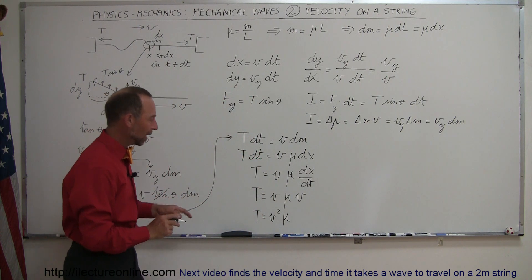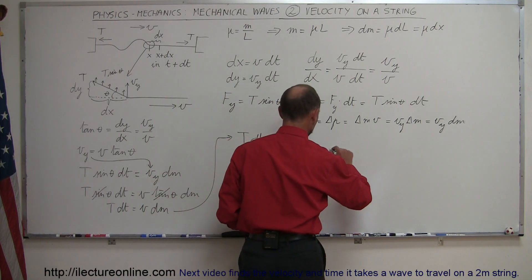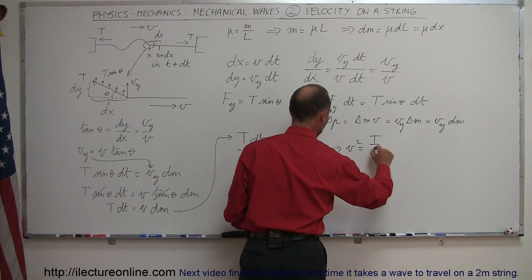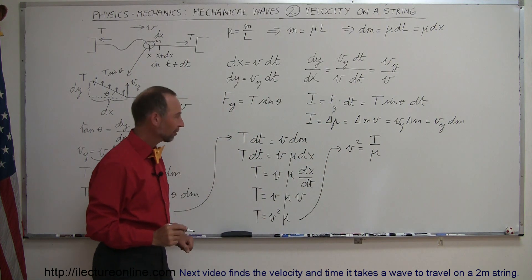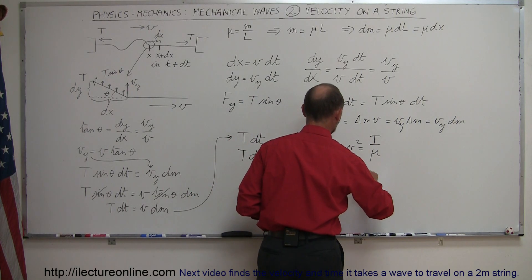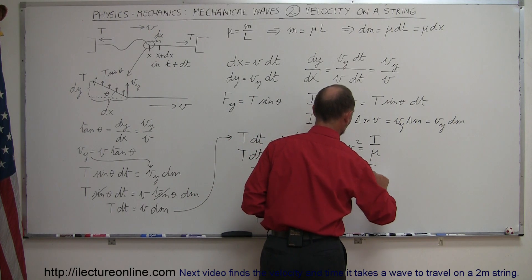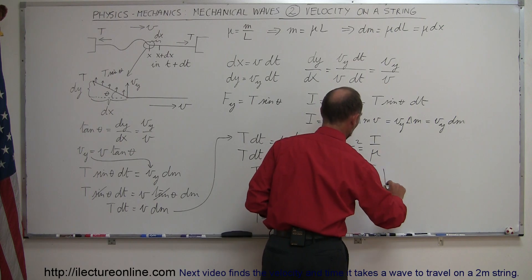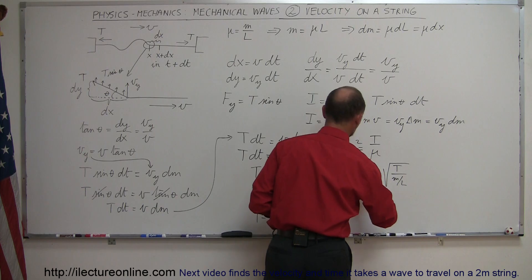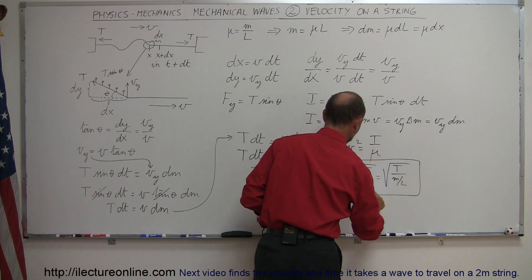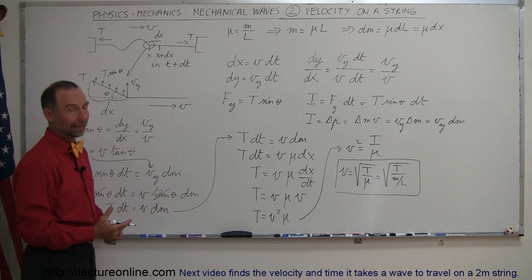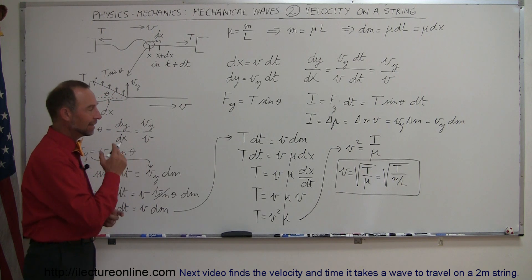Since we're solving for the velocity of the wave, we rearrange: v² = T/mu. Therefore the velocity of the wave equals the square root of the tension divided by the mass per unit length — v = √(T/μ). This is the velocity of any wave on a string and depends on both the tension and the mass per unit length.